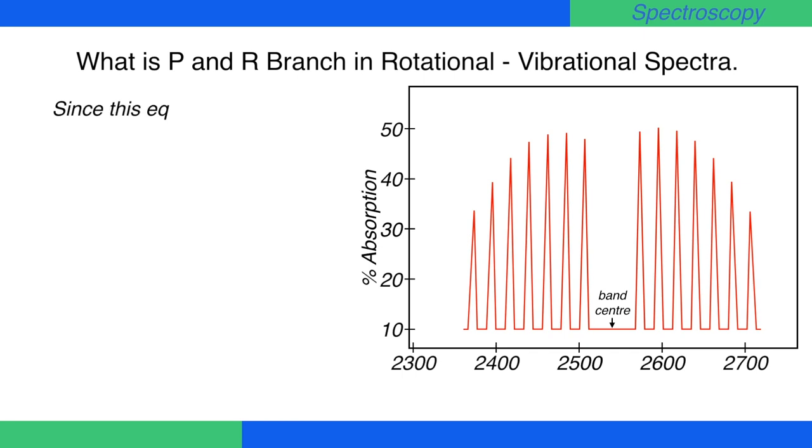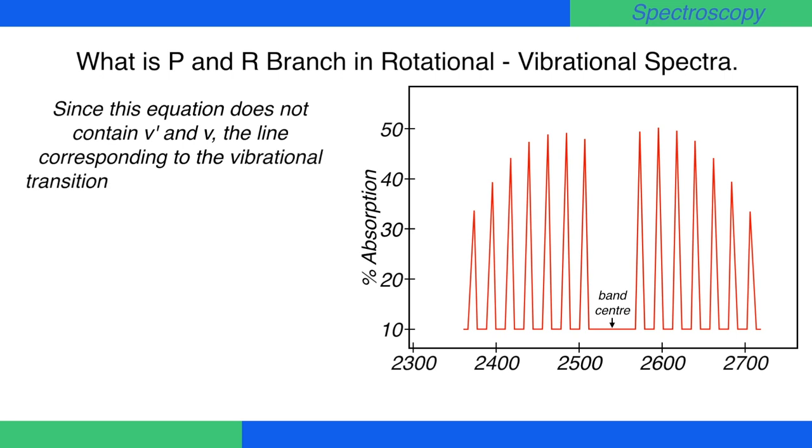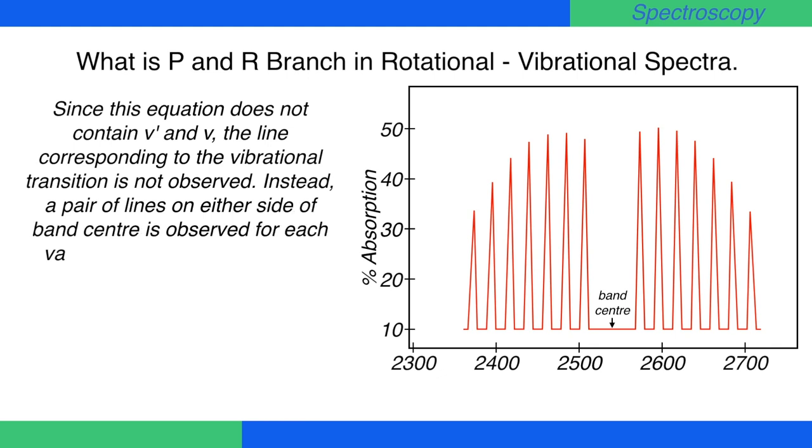Since this equation does not contain v dash and v, the line corresponding to the vibrational transition is not observed. Instead, a pair of lines on either side of the band center is observed for each value of J.